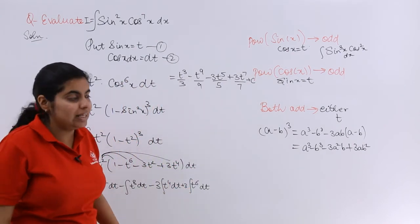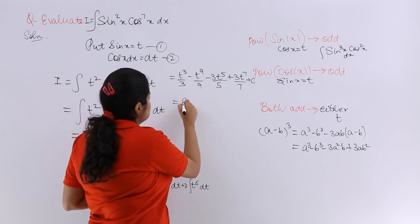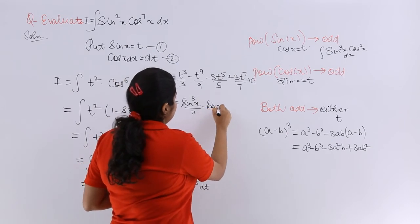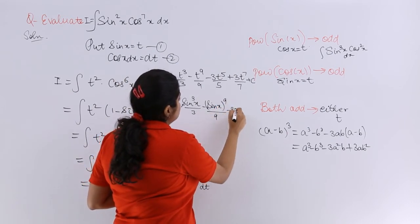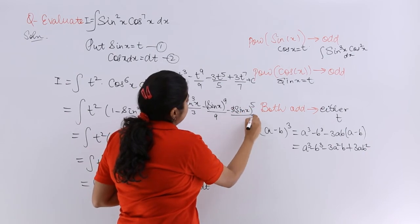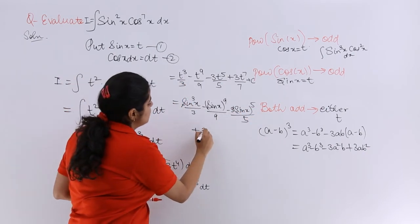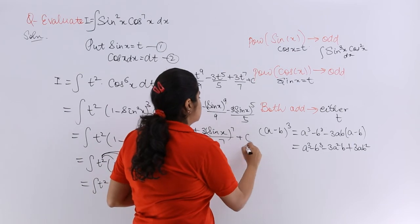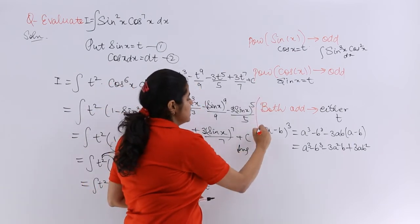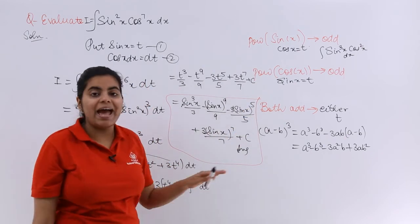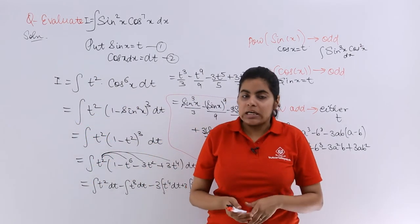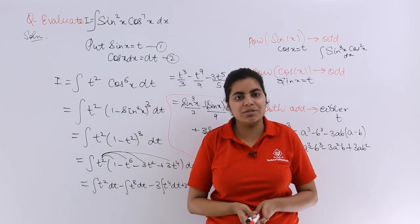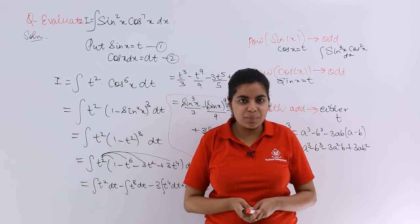Now substitute back t = sin x. The final answer is: sin³x/3 − sin⁹x/9 − 3sin⁵x/5 + 3sin⁷x/7 + C. This is the answer to the question. The methodology relies on the identity sin²θ + cos²θ = 1, and the rest comes with practice.